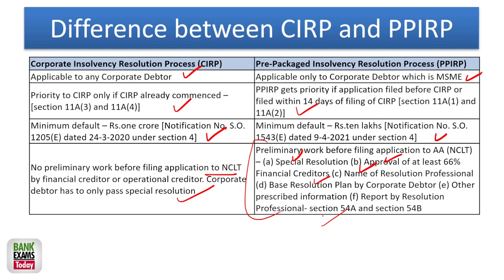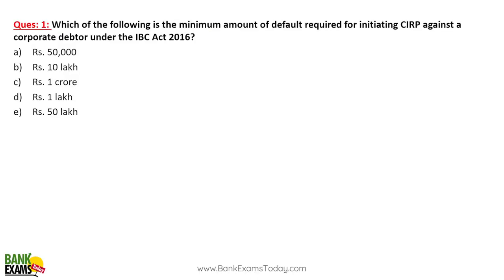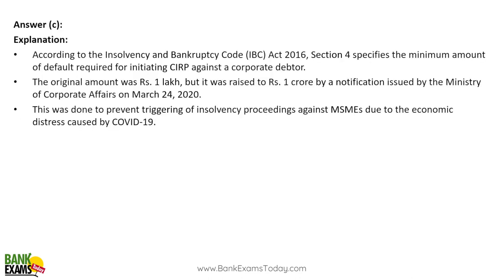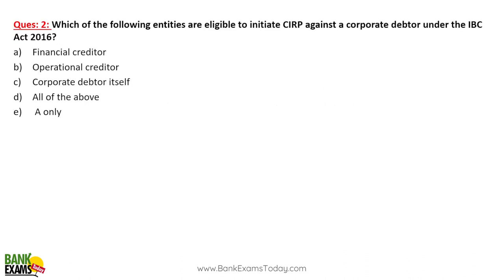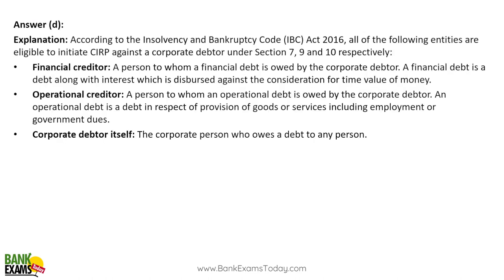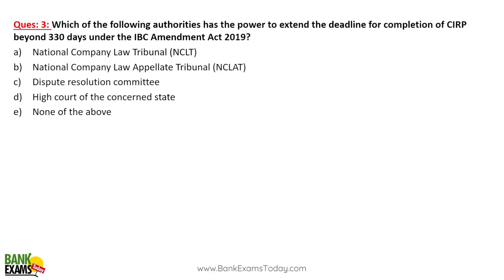Practice questions: The minimum amount of default required for initiating CIRP against a corporate debtor is 1 crore; for PPIRP it is 10 lakhs. The entities eligible to initiate CIRP are financial creditors, operational creditors, and the corporate debtor himself — all of them. For pre-packaged insolvency, only the corporate debtor itself can initiate the process. The authority that has power to extend the deadline for CIRP completion beyond 330 days is only the Supreme Court — not NCLT, NCLAT, any resolution committee, or High Court.